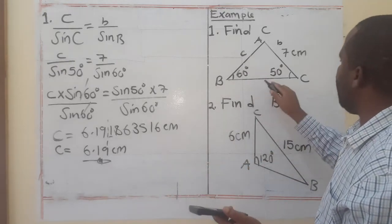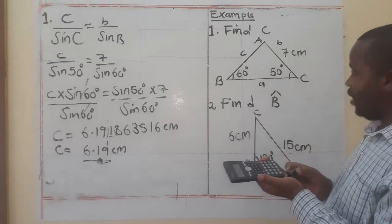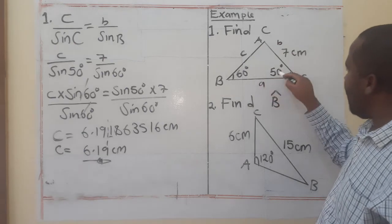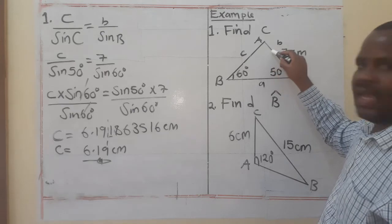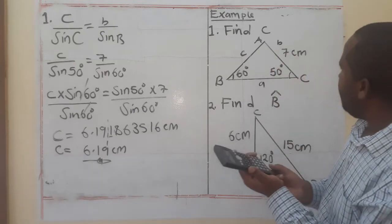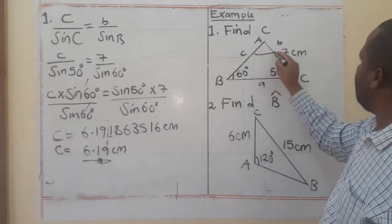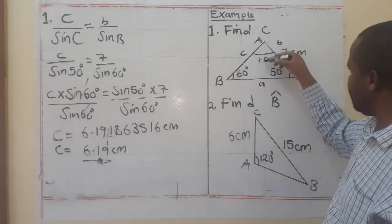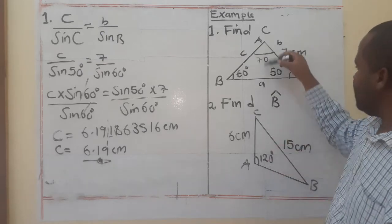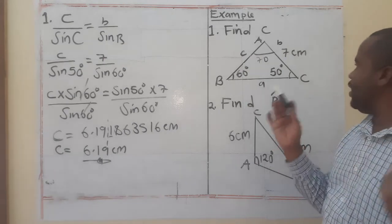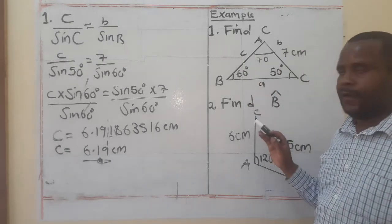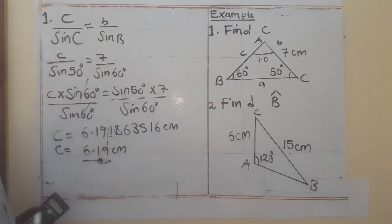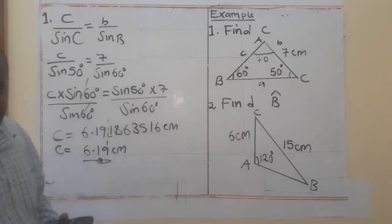Now suppose we were asked to find angle A instead. We would add the two known angles — 50° and 60° — to get 110°, then subtract from 180° to get 70°. We would then use the 70° and its corresponding side pair. Always make sure you use a complete angle-and-side pair, and round answers to three significant figures.